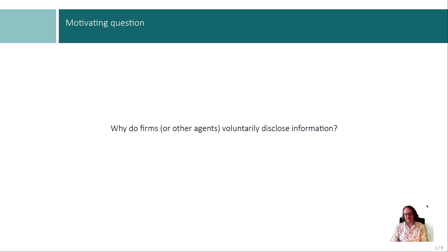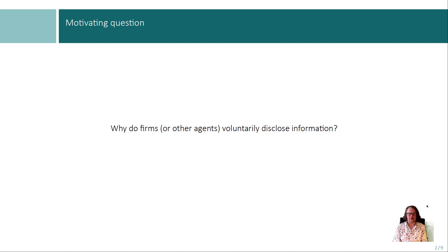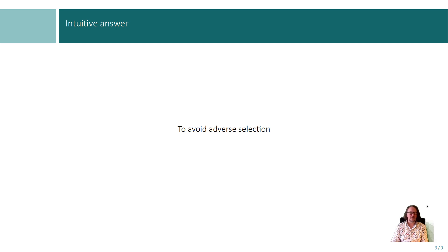Unraveling basically addresses the fundamental question of voluntary disclosure: why do firms, or other agents for that matter, voluntarily disclose information? What is the incentive and how does that work? I always give the motivating question first and then a very bare-bones answer as a main takeaway right from the start, and then we dive into it a little bit more. So why do they do this? Well, to avoid adverse selection.